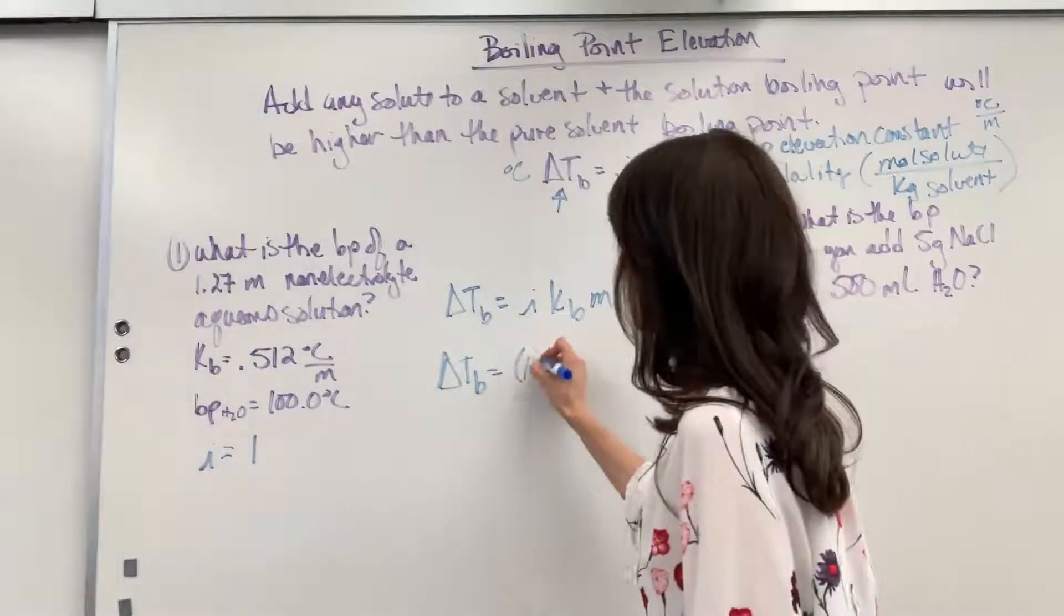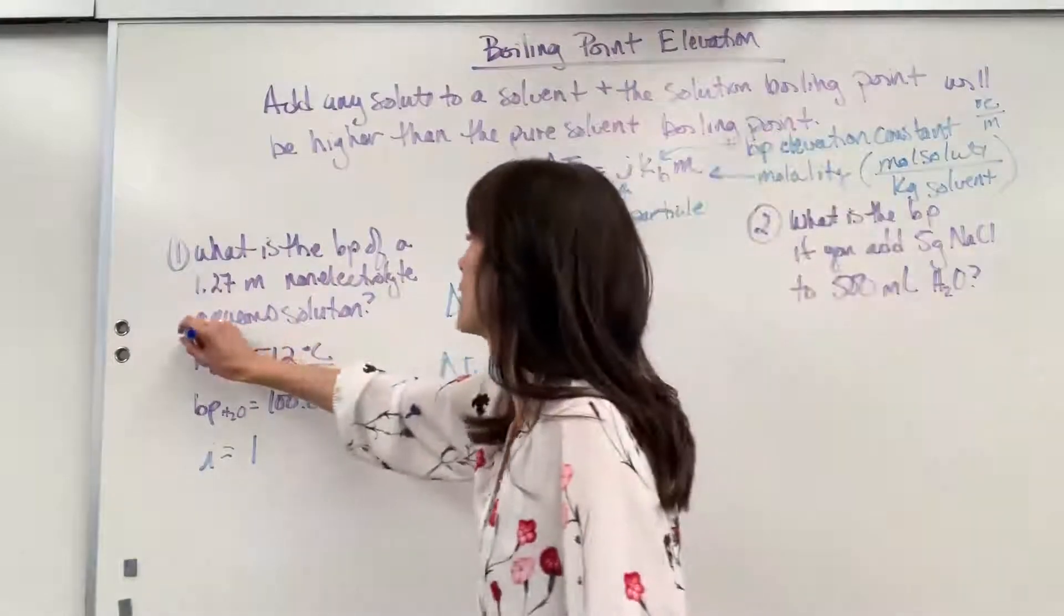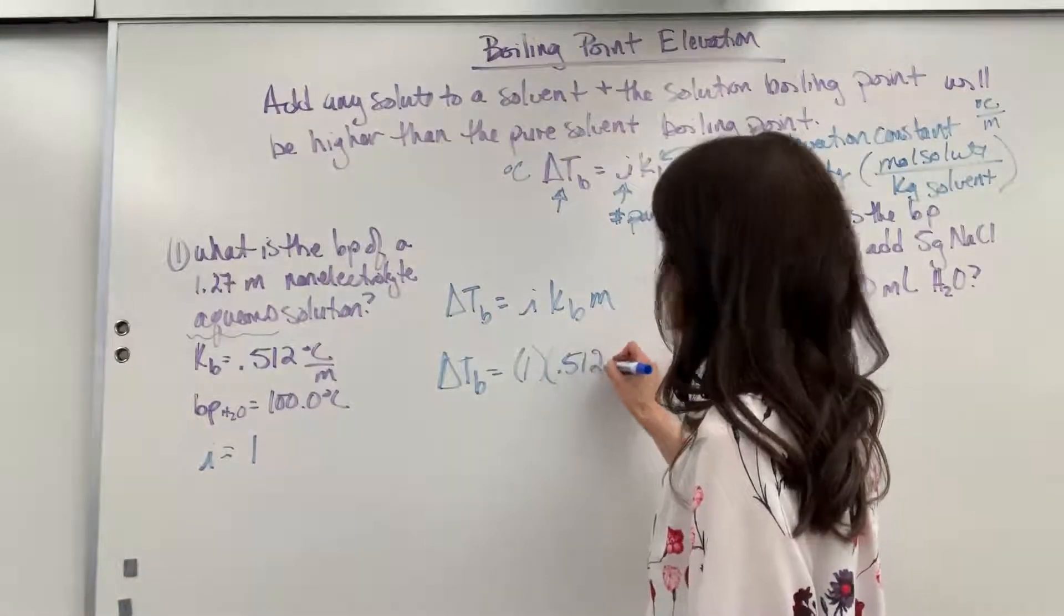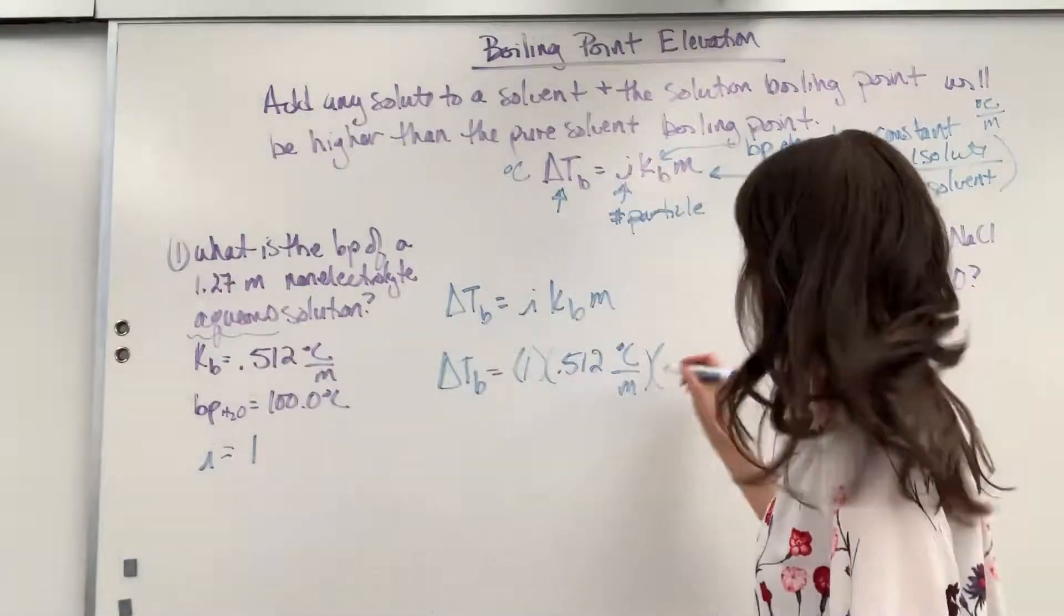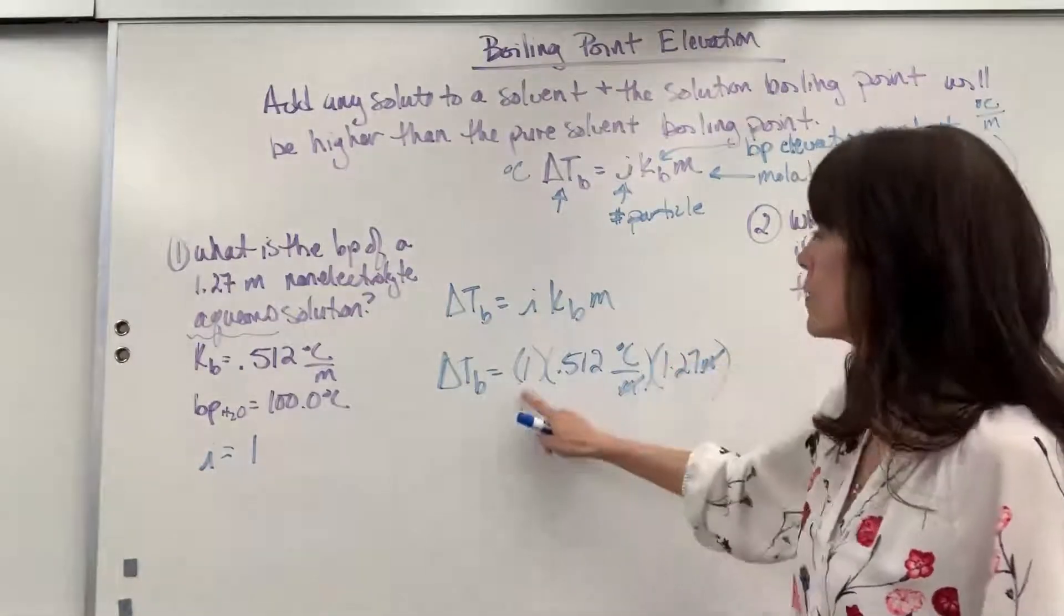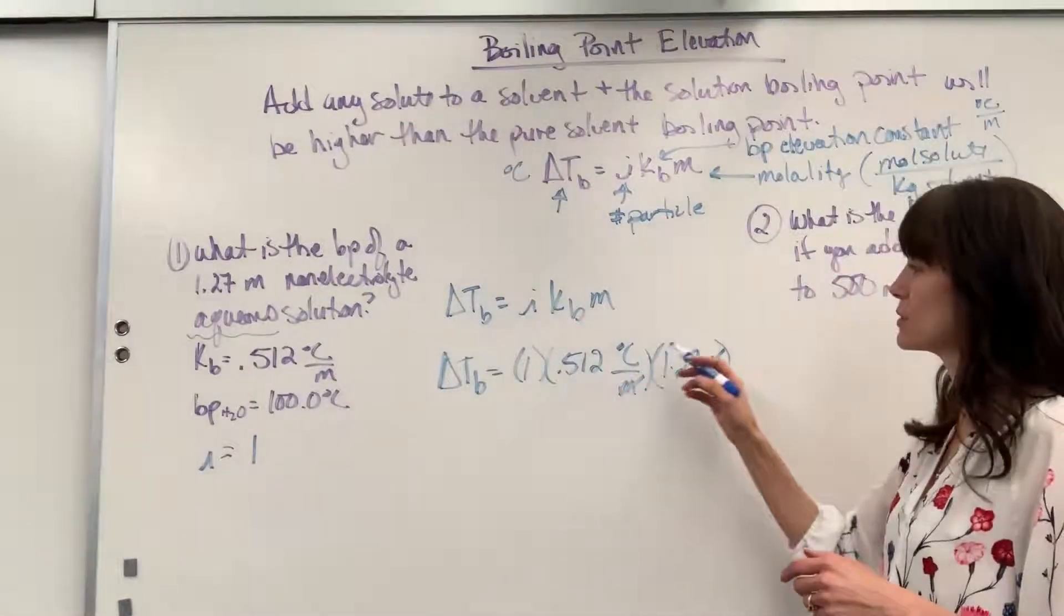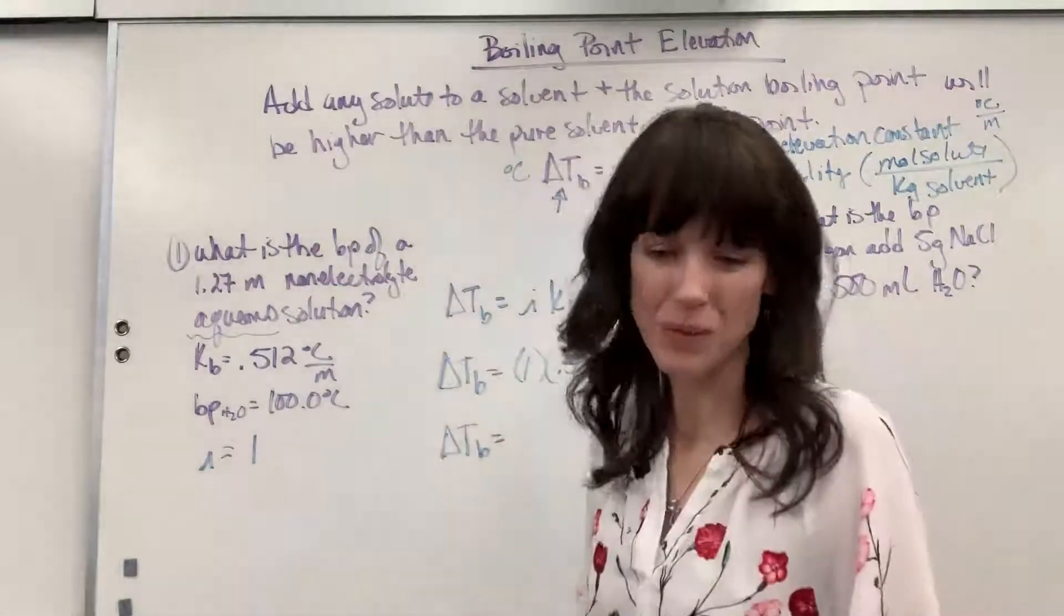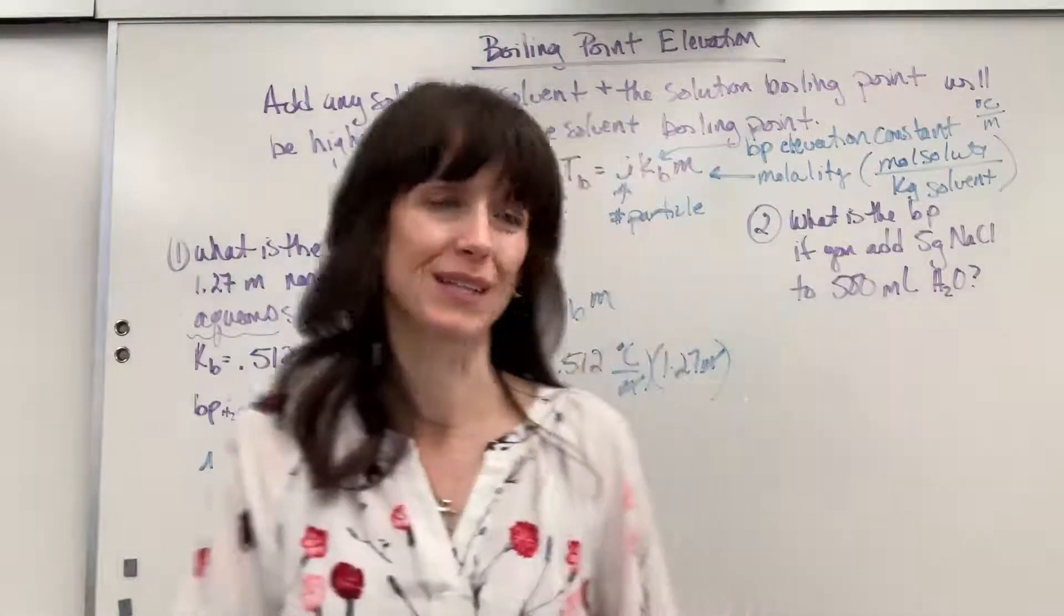Non-electrolyte I is 1. The KB, I looked this up for water, and that was the word aqueous that clued me in, is 0.512 degrees C per molal. And they gave us the molality, 1.27 molal. Look at my units - molality cancels. Multiply this, 1 times 0.512 times 1.27. The change in temperature for this boiling point is going to be 0.65 degrees C.